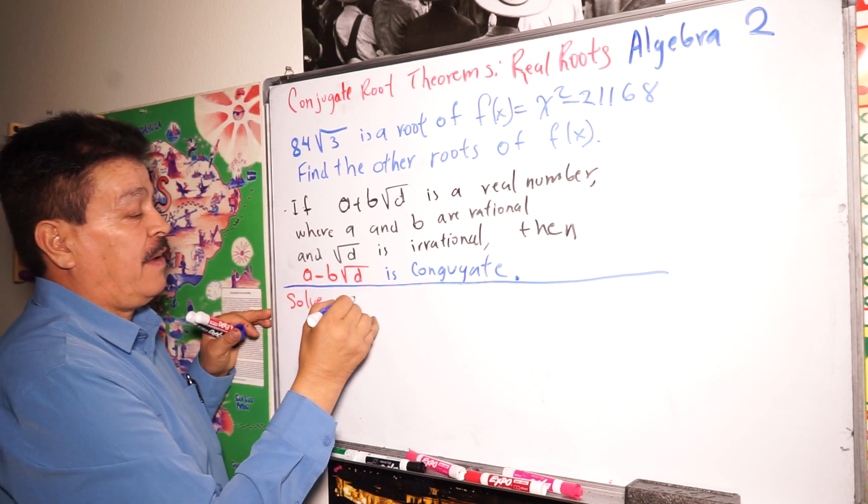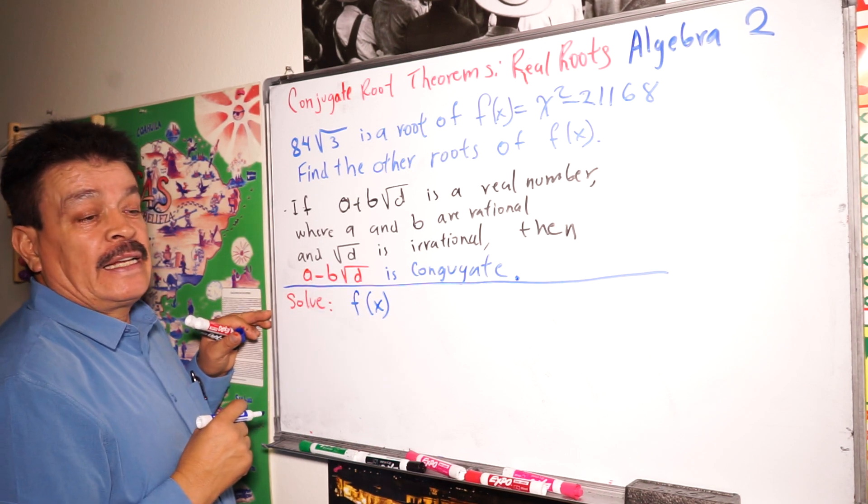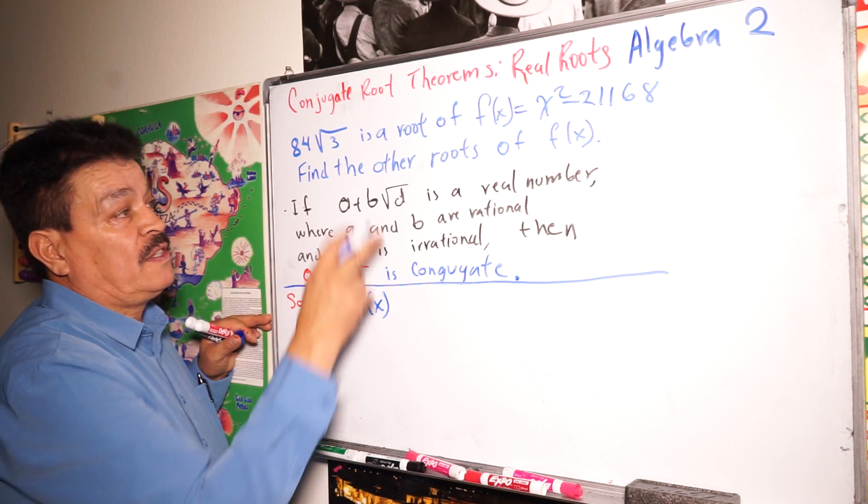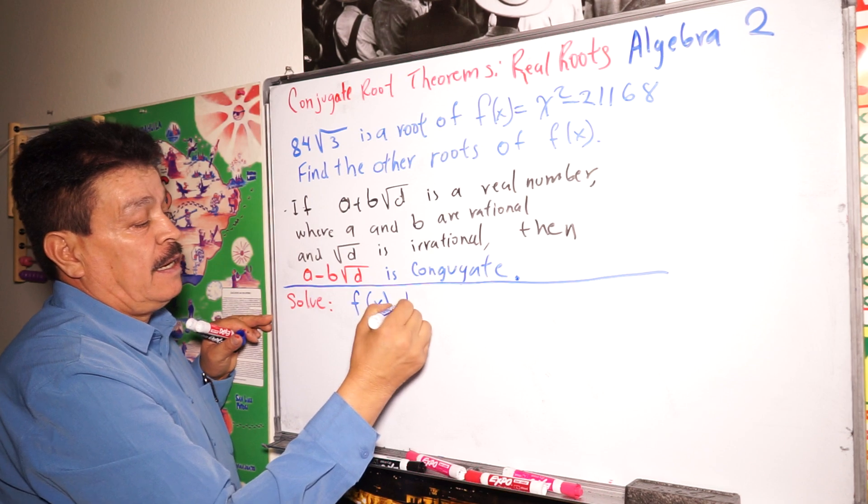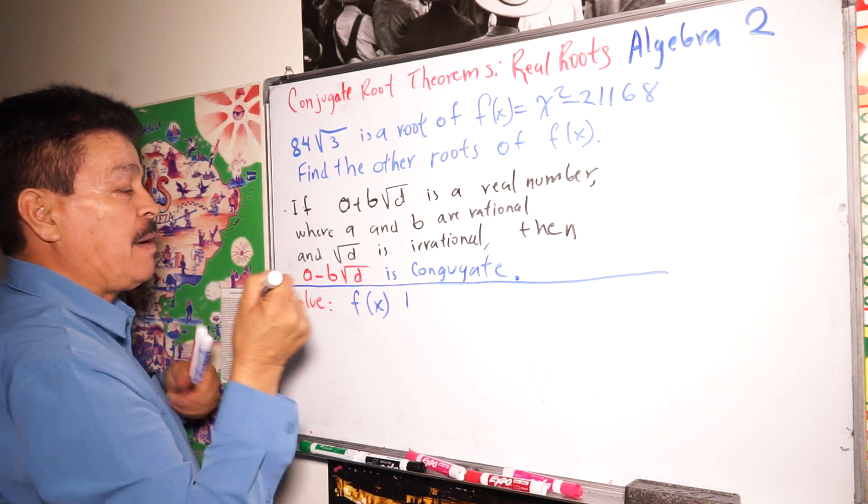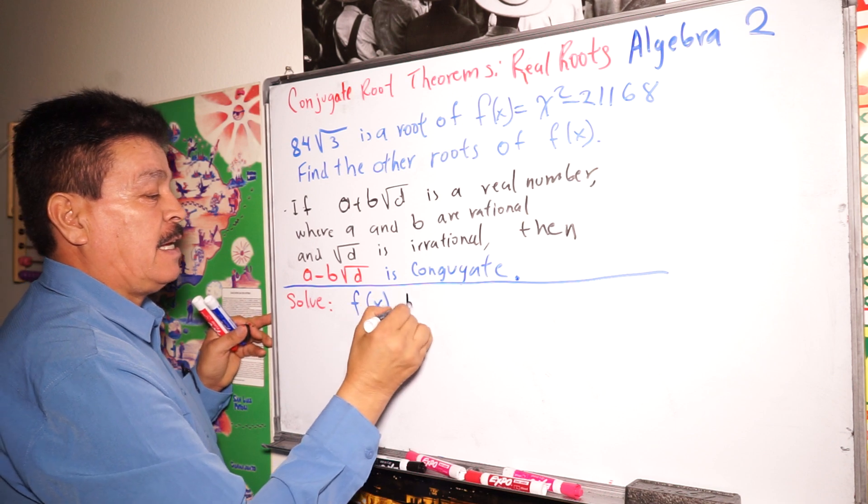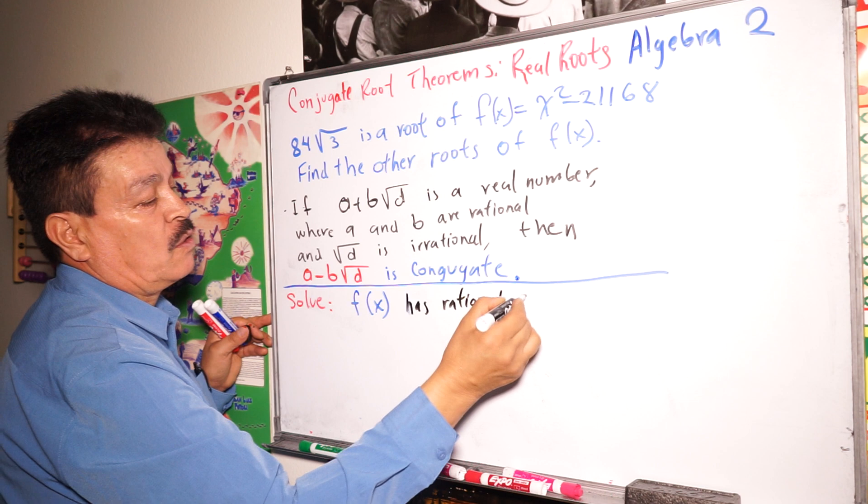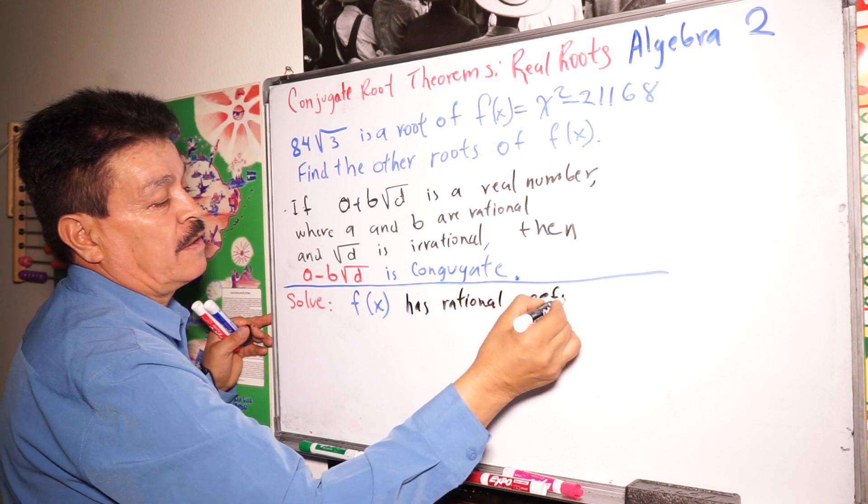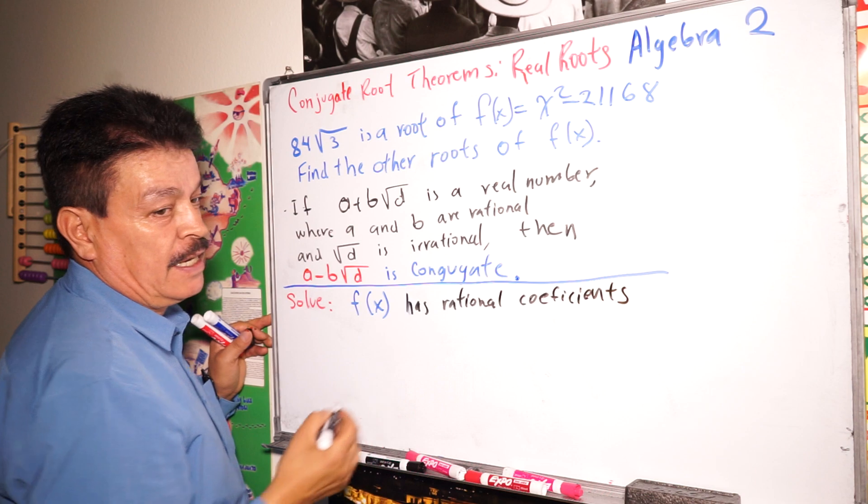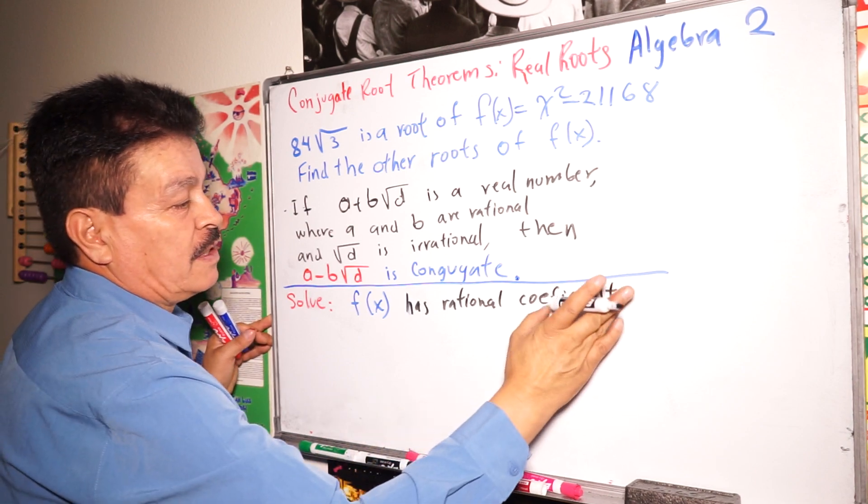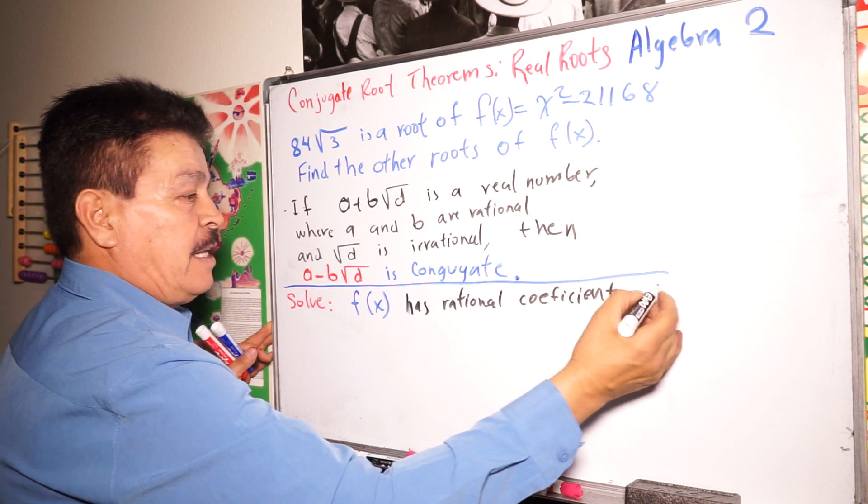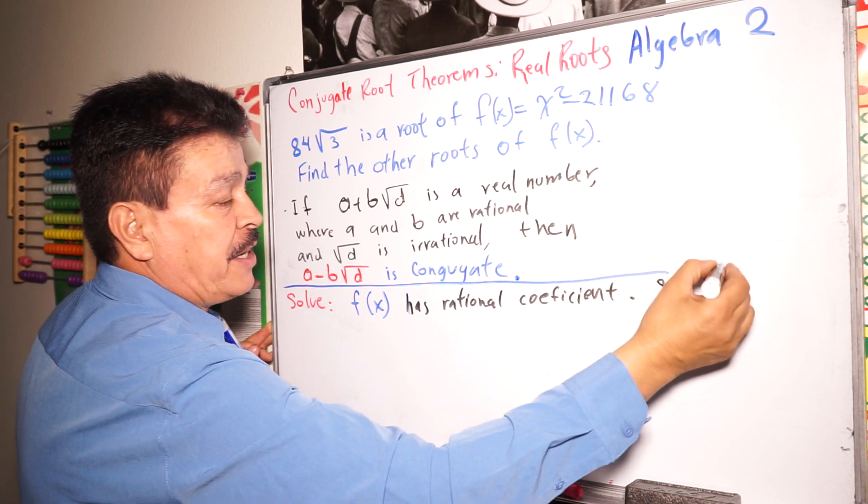We're gonna solve f(x) here. It has rational coefficient in this case. Let's write step by step. This case has rational coefficient. We have one problem. Then, so the conjugated.